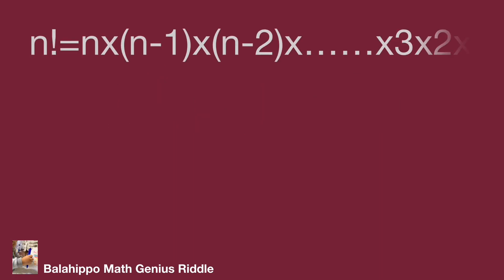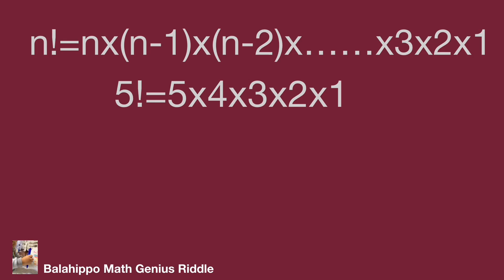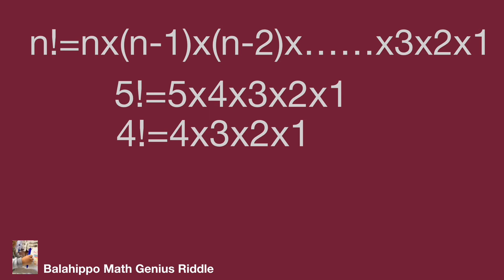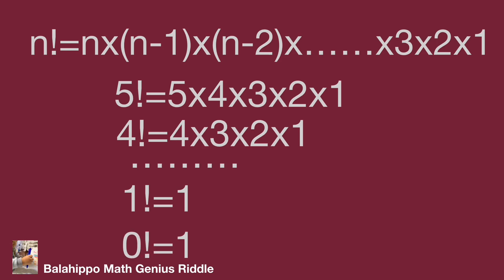n factorial equals n times (n minus 1) times (n minus 2) times the numbers minus 1 with the previous items, continuing down to 3 times 2 times 1. For example, 5 factorial equals 5 times 4 times 3 times 2 times 1. Similarly, 4 factorial equals 4 times 3 times 2 times 1. And 1 factorial equals 1. We also define 0 factorial equals 1.